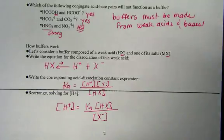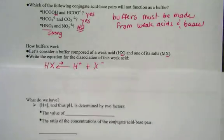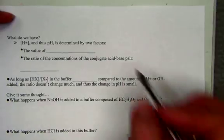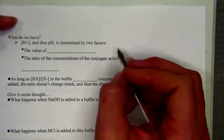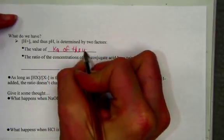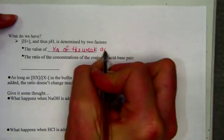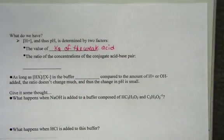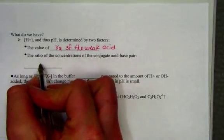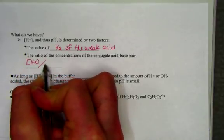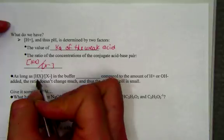We'll need to flip our page in our notes, so it asks, what do we have? If H plus and therefore pH are determined by two factors, we could see the value of Ka playing a role. The value of the weak acid has its own unique Ka value. And we also see a ratio of the conjugate acid base pair, HX over its conjugate base, X negative.